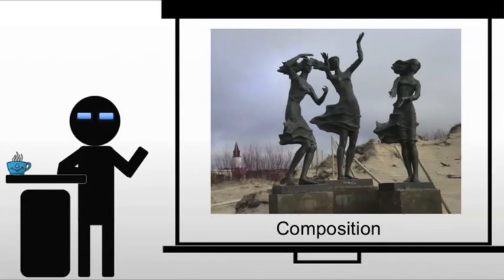Next we have composition, and we see many of the same elements here in sculptures we've dealt with in two-dimensional art. For example, line, form, color, mass, texture, balance, repetition — but some of them are going to be used differently. So let's look at some of those.